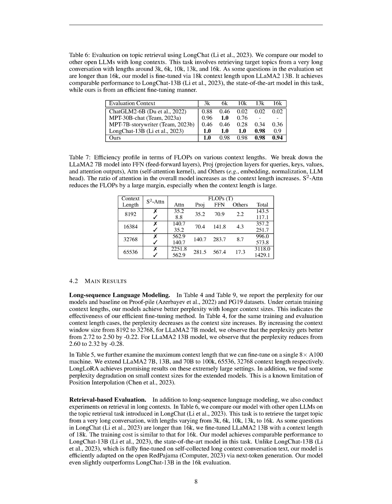The proposed S²ATTN design improves the efficiency of long-context language models by enabling efficient fine-tuning and supporting full testing. It outperforms other efficient designs like short, dilated, and stride sparse, which are not suitable for long-context fine-tuning. Additionally, the implementation of SHIFT-SHORT, a key component of S²ATTN, is straightforward and involves only two lines of code.